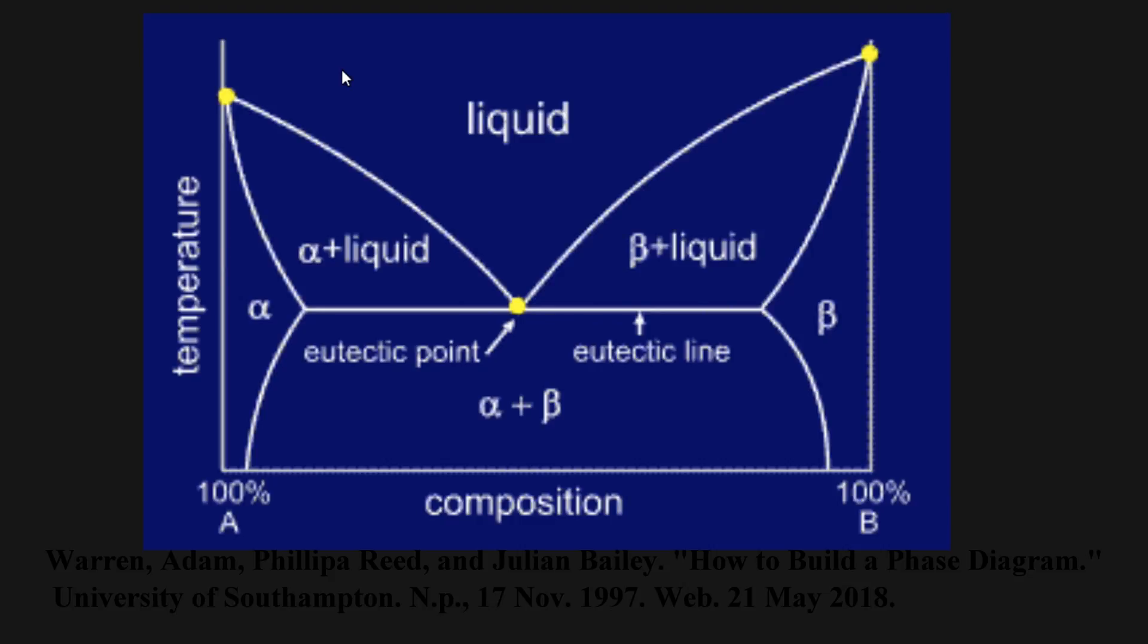The word eutectic is of Greek roots. The prefix eu means easy and the remainder of the word means melting. This is a very practical name because eutectic alloys are quite easy to melt in most cases.